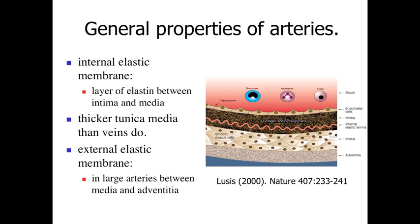To start with some generalizations, we'll take a look at the general properties of the arteries. We're going to see the three layers within the blood vessel wall: the tunica intima as the innermost layer, the tunica media as the smooth muscle layer, and the tunica adventitia as the outer region.